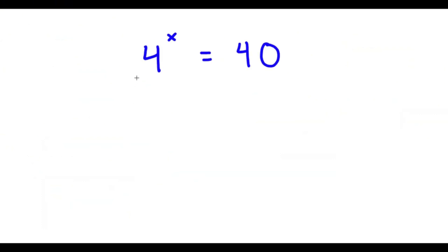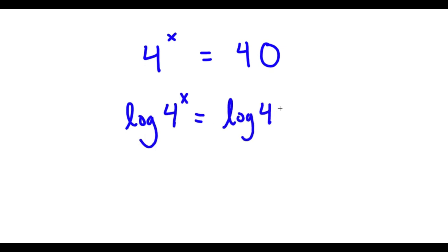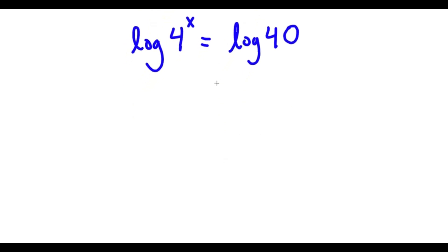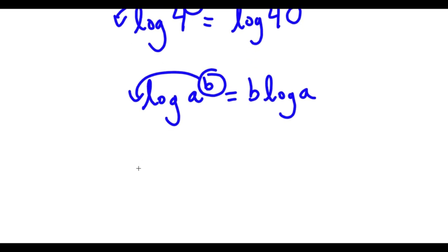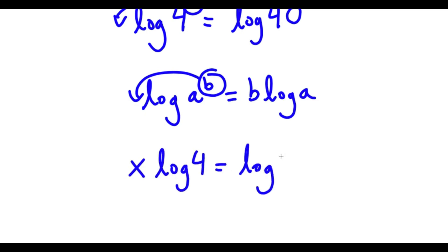In this problem, I have 4 to the power of x is equal to 40. To solve this, I'm going to first start by taking the log on both sides. Now I have log 4 to the power of x is equal to log 40. If I have something in the form log a to the power of b, I can move b to the front, so this is equal to b times log a. So I can move x to the front, giving me x times log 4 is equal to log 40.